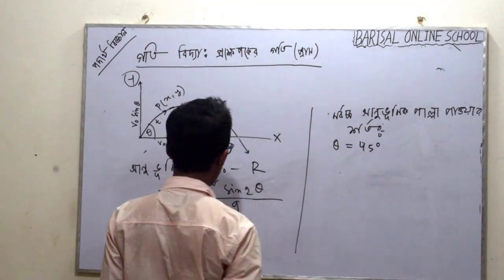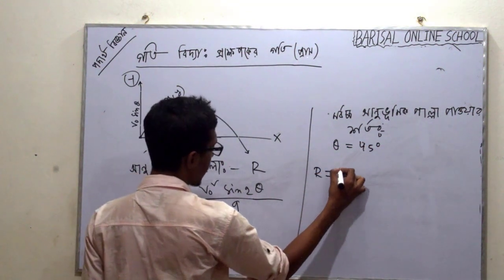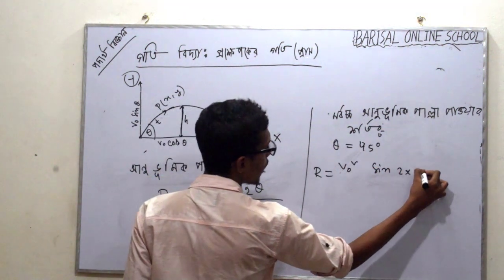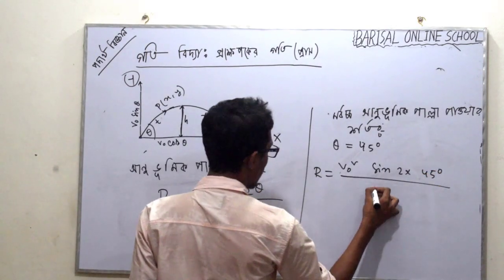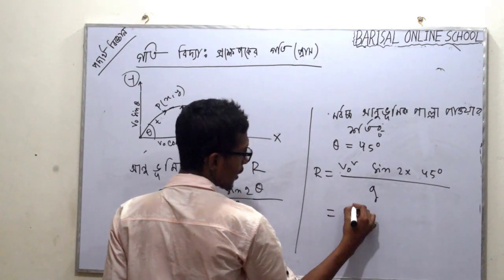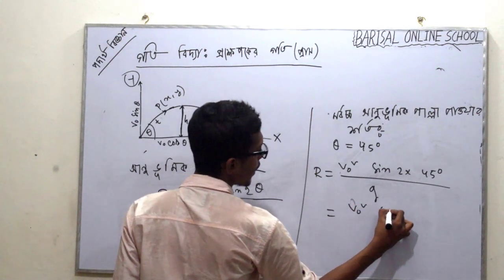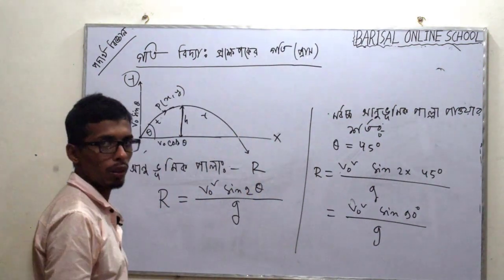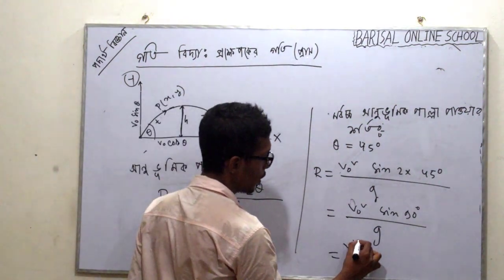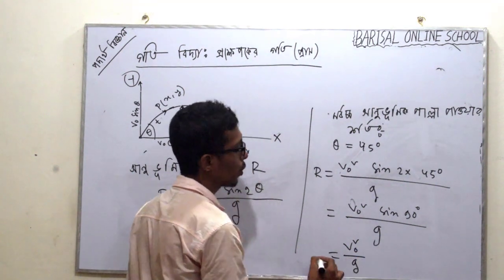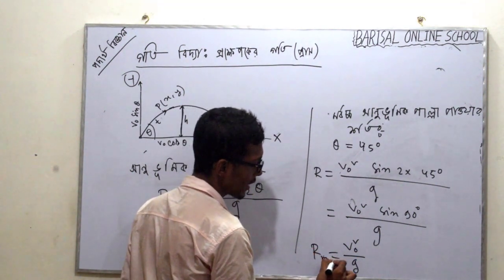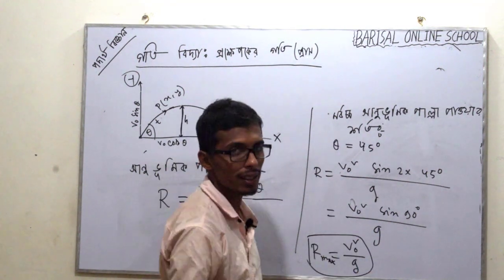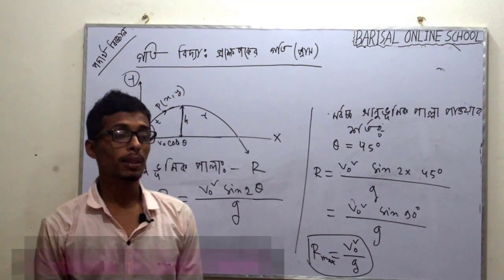We are equal to v² sin(2×45°) by g. We know sin 90° divided by g, and sin 90° equals one, so the maximum range equals v² by g. This is the maximum range equation — maximum range in x direction.